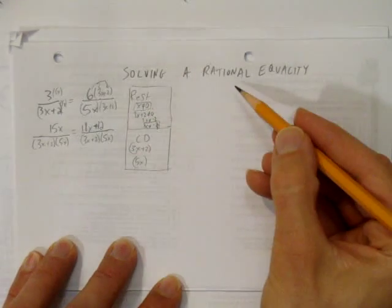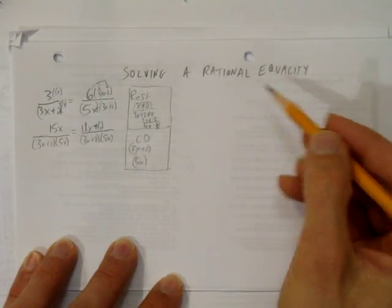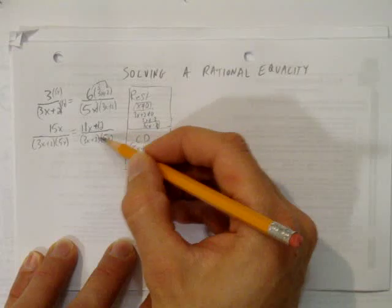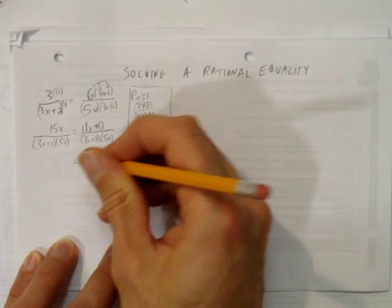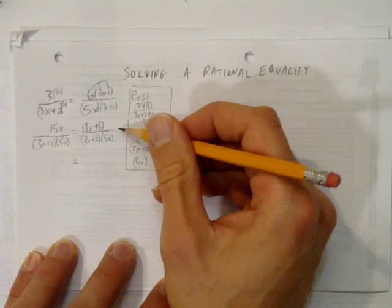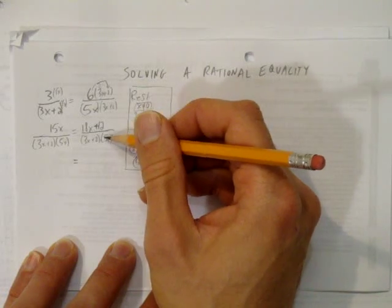Now what we can do, because we're solving a rational equality, is we can totally get rid of these denominators. That is, you can think of them being cancelled out, or you can think of multiplying both sides by 3x plus 2 and by 5x.